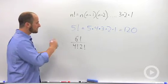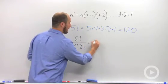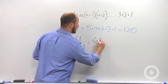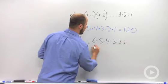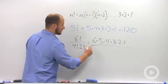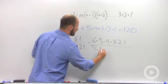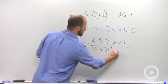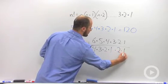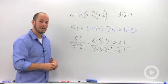Six factorial tells us we are looking at six times five times four times three times two times one. Four factorial tells us we're looking at four times three times two times one, and two factorial is just two times one.